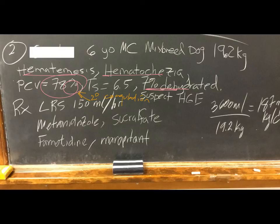So let's take a look at what was done. In this case, the dog got 150 milliliters per hour. 150 milliliters per hour times 24 is 3600 mils divided by 19 is about 187 milliliters per kilogram per day. This dog also, when you see it was suspected of HGE, with a hematocrit of 78%, you have to. And so this is also aggressive fluid therapy.